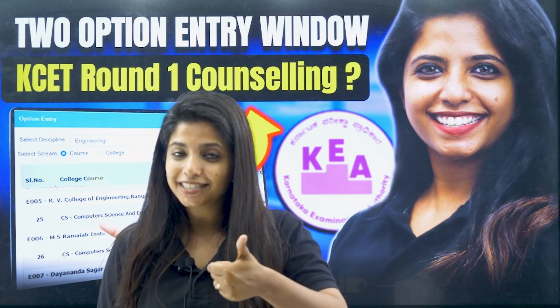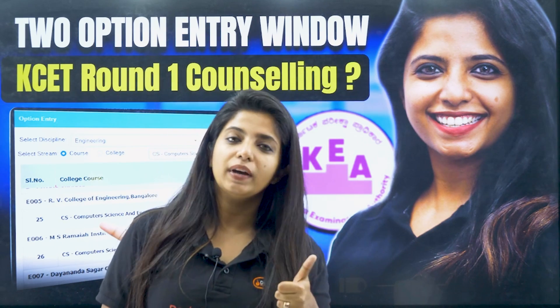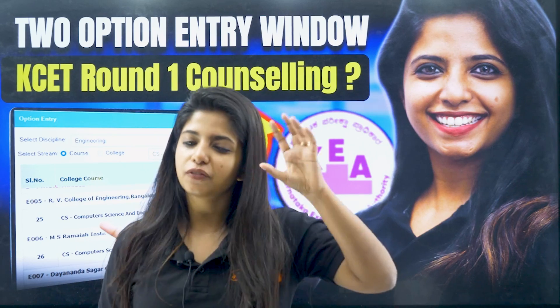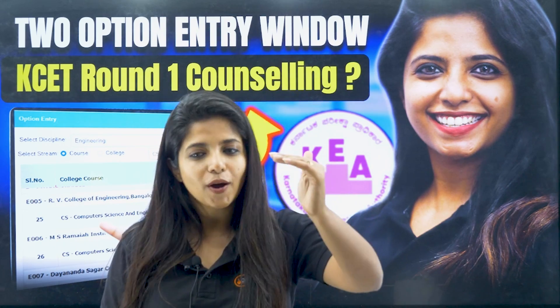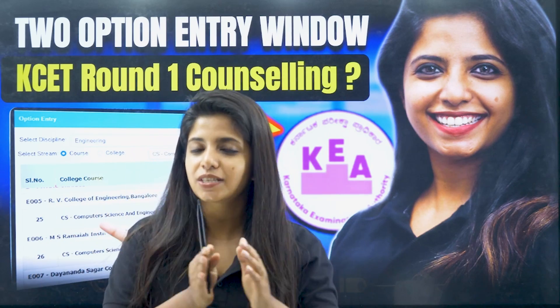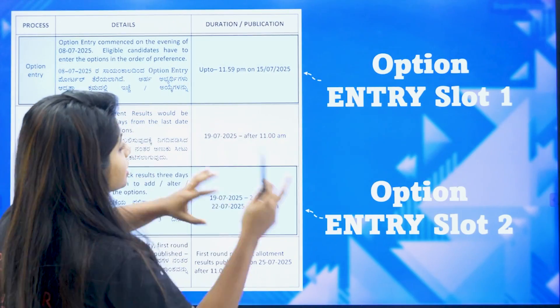Well, the good news is that mock allotment is happening, which is why you get two chances to fill in the option. So the first time you did something wrong, do not worry, you will have an option to make certain changes later on. So how does that happen?